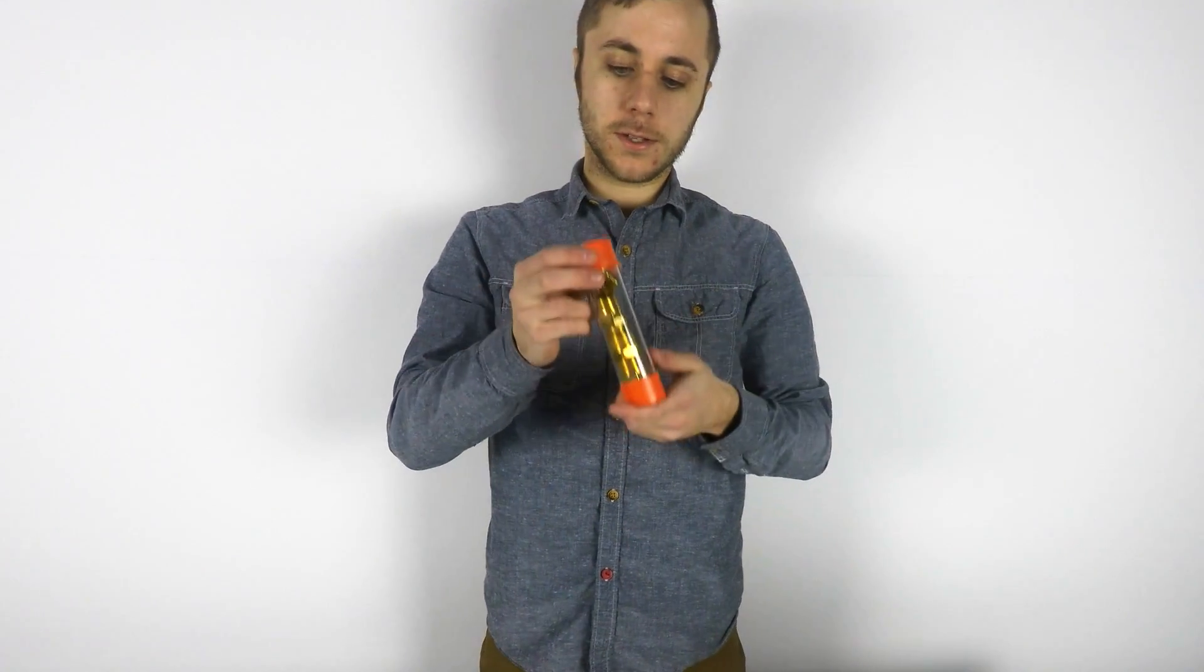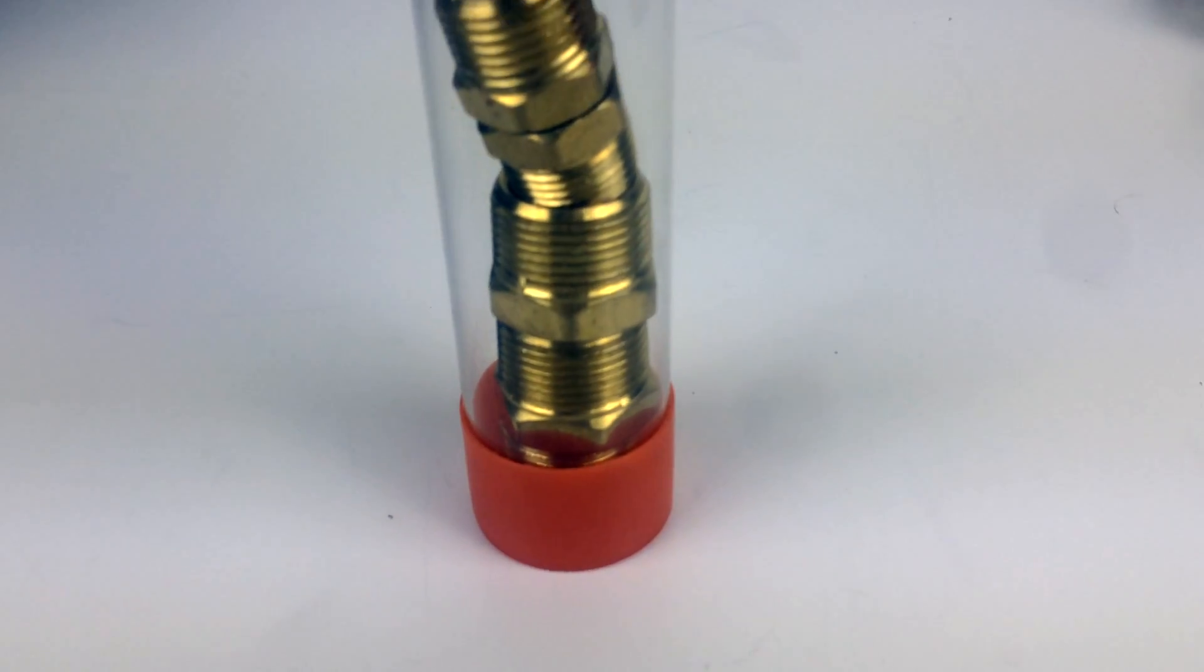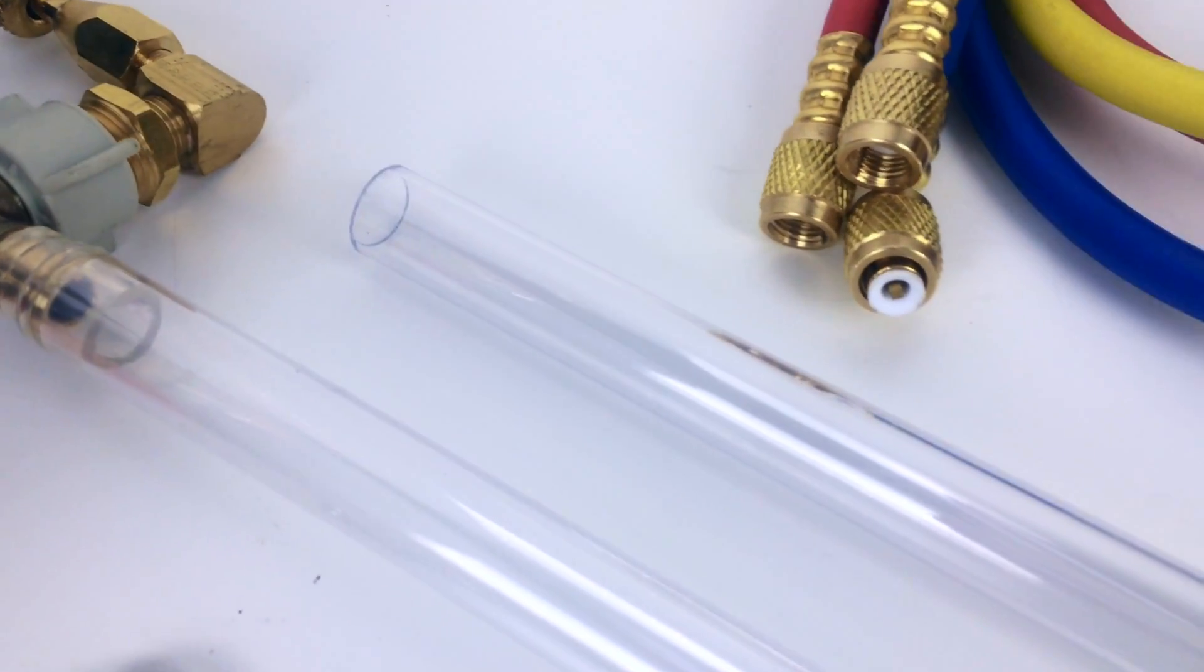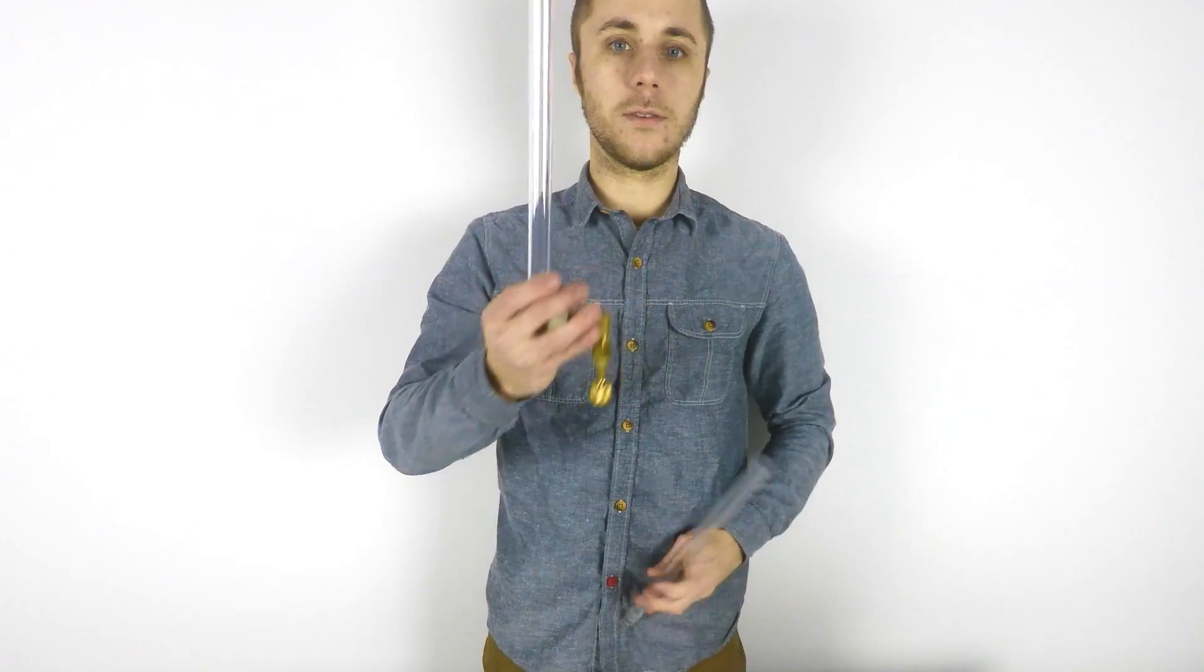Other accessories include our standard pack of fittings, our new two-piece sight tube that you tighten right onto your preventer, and standard bleed off valve.